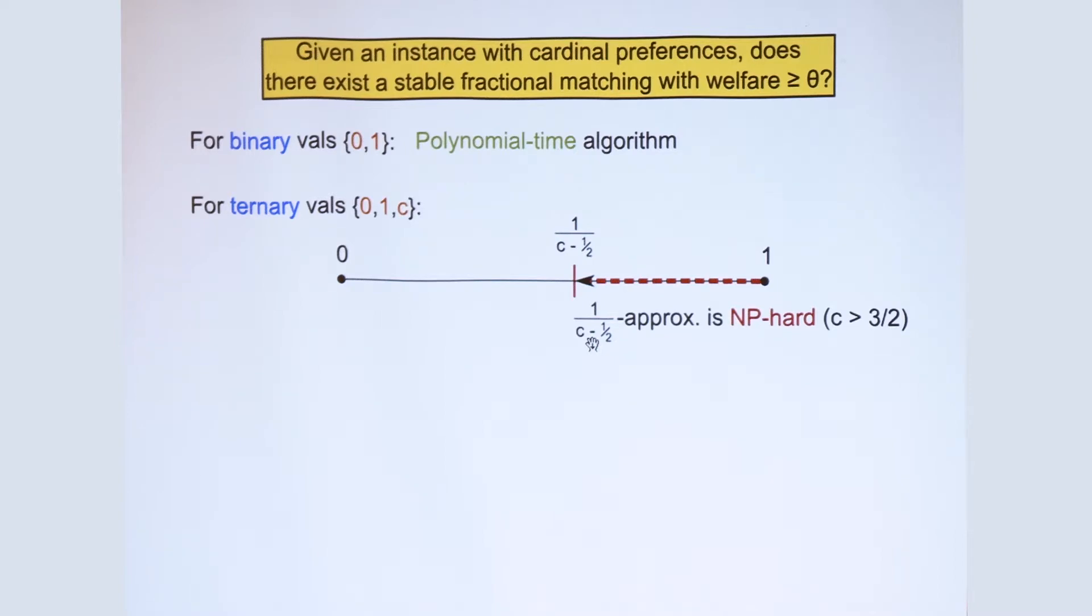So our main result is that doing anything better than a 1 over C minus half approximation is a computationally hard problem. So this is a very strong inapproximability result, even in this very, very simple class of valuation.